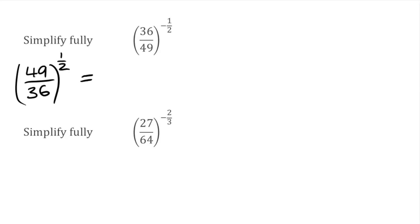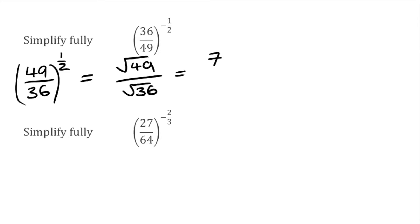Because we've got this power of positive 1 half, we look at the bottom number — it's a 2 — so we're looking for the square root of both parts. This is the same as the square root of 49 over the square root of 36. All we have to do is simplify these: the square root of 49 is 7, and the square root of 36 is 6. So our final answer to that would be 7 over 6.